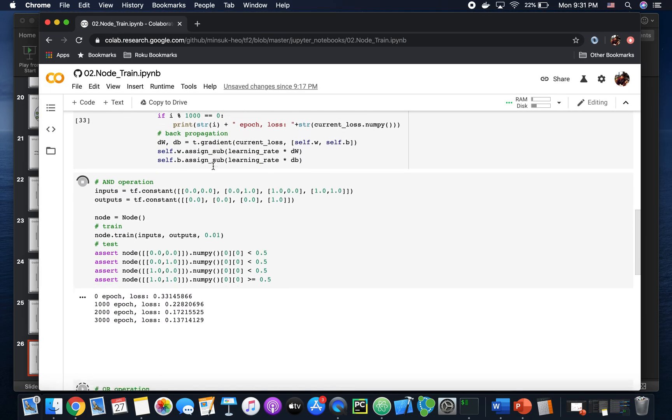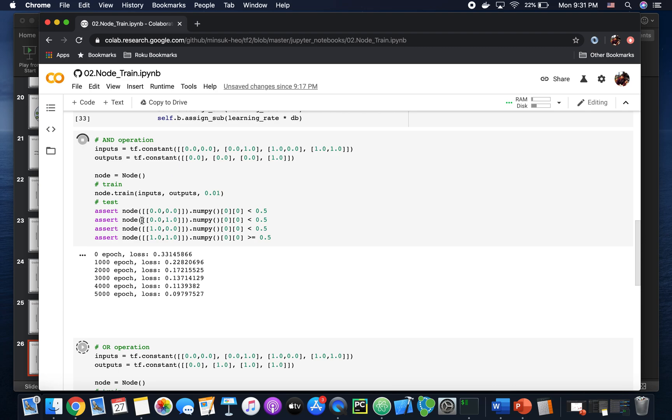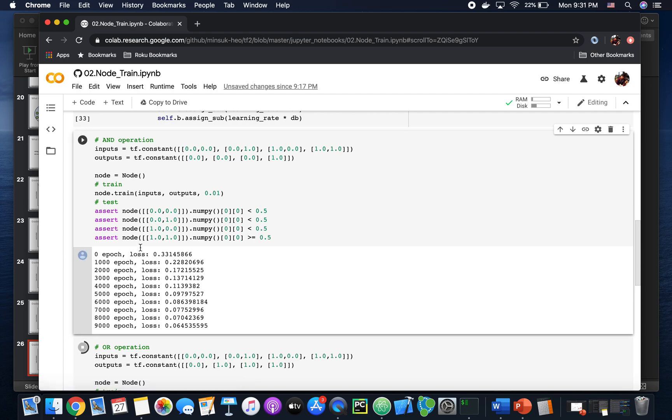And you can see this is AND operation. I'm running 10k epochs here. You see the loss is going down. And at the end, I'm testing the four inputs here.